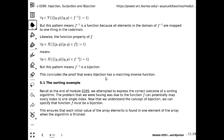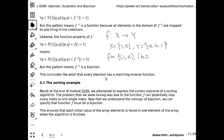A student asks: wouldn't having more elements in the co-domain make it not a function? No, it is still a function. Example: let f map X = {1, 2} to Y = {a, b, c}, and f = {(1, a), (2, b)}. This is injective because 1 and 2 map to different elements. But it is not surjective because c is not mapped to. So that's an example of injection without surjection.